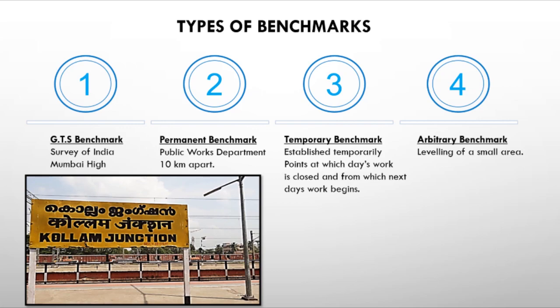The third type is the temporary benchmark — when a survey is paused and continued the next day, a point is set as a temporary benchmark. The fourth is the arbitrary benchmark — used when leveling in small areas, where an assumed reduced level is fixed. These are the four types of benchmarks.